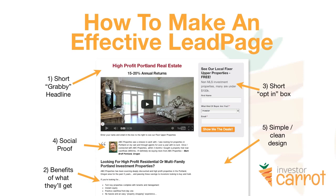You should have a short opt-in box. Then some optional things you should test: social proof. I have a picture there pointing toward a testimonial — 'ABC Properties was a breeze to work with. I was looking for properties in Portland through agents for over a year with no luck. Once I connected with ABC Properties, within three months I bought a property that now cash flows $800 a month. I'll definitely be buying more properties from them.' Name, location, and picture. If you can put testimonials on your lead pages, your conversions are going to go way up because your believability goes up.